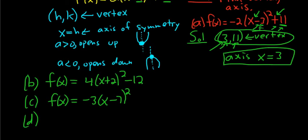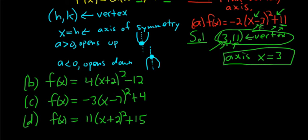And part d: f(x) equals 11 times (x plus 2) squared, plus 15. And for all of these, we'll find the vertex and the axis. So vertex, vertex, vertex.